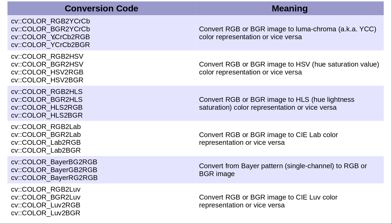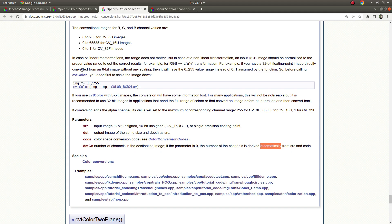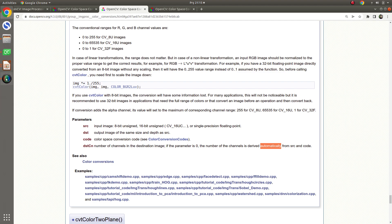The YCrCb format is also close to the BGR format — it mostly takes care of brightness with the Y channel, while Cr and Cb take care of the colors in the view. Also HCV is important. Maybe some of these color types we will see in more detail in future projects. Let's continue with the code part.